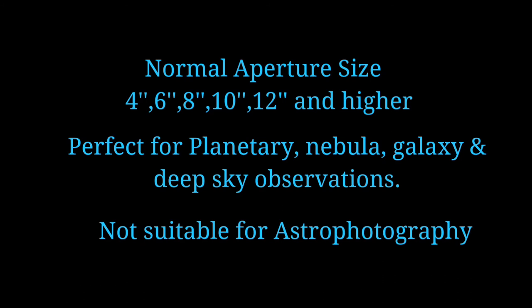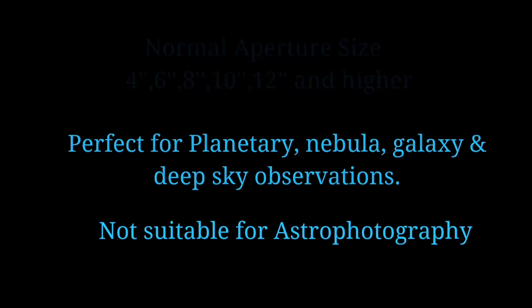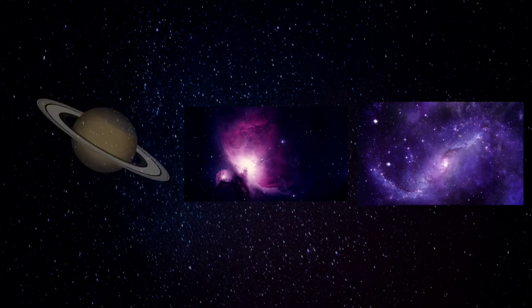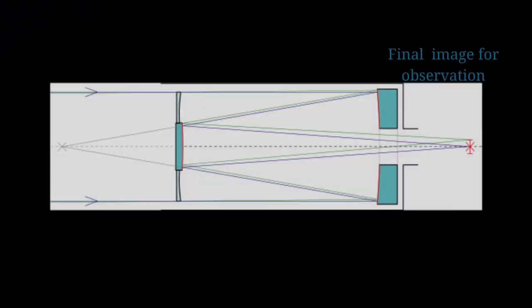Reflectors are operated on the concept of reflection of a mirror. The aperture size of this type of telescope starts from 4 inch, 12 inch, 14 inch, or higher. This type of telescope is best for those who really want to search for deep sky objects. You can see planets, star clusters, nebulae, galaxies, and more deep sky objects with this type of telescope, but it is not suitable for astrophotography.